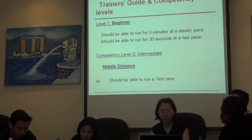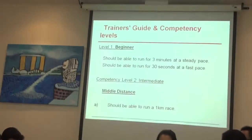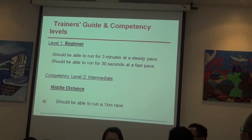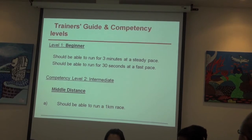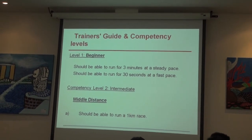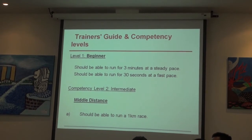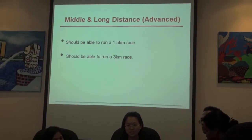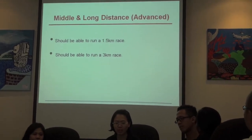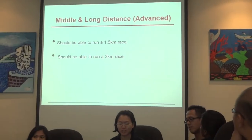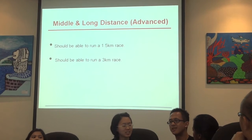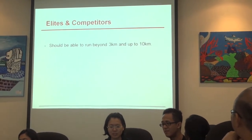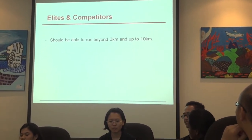The trainer's guide has competency levels. You should be able to run for 30 minutes at a steady pace. Competency level two is intermediate, which is middle distance — should be able to run one kilometre. You can put that into the different competency levels according to middle distance. Long distance is the advanced module — you should be able to run from 1.5 km. Note that this does not require timing; as long as they are able to run the distance, they are fine.